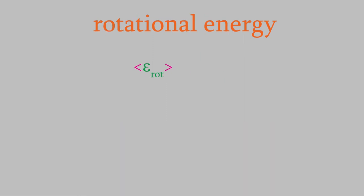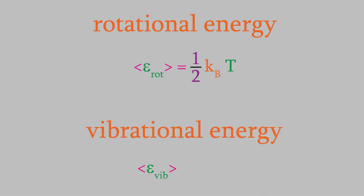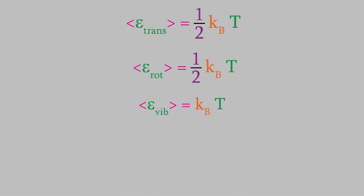Rotations have a similar energy. Rotation around an axis has a value of one-half kb times T, just like the translational energy in one dimension. Each vibration contributes twice as much energy to the molecule as a rotation does, so each vibration contributes kb times T. Now we know how much energy each translation, rotation, and vibration contributes to the molecule.